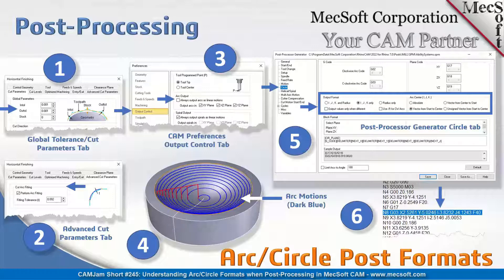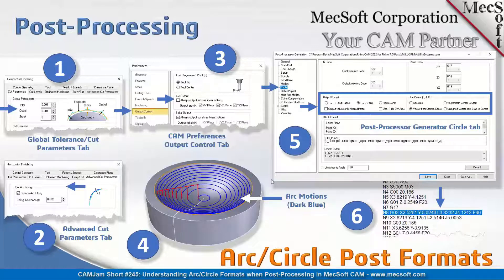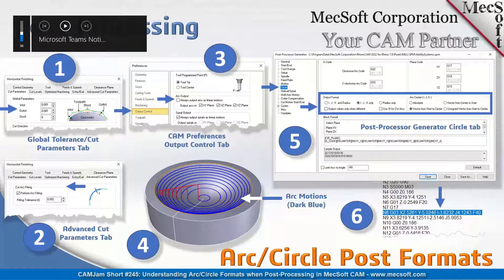If you have arc fitting enabled and your controller supports it, it's always a good thing to enable because it'll save on the amount of G-code you're outputting. You've got one line of code for an arc; without arcs enabled, this may end up being 100 lines of linear motions depending on your global tolerance. Very rarely do we run into machines that don't support arcs today.